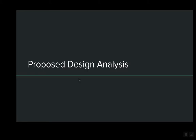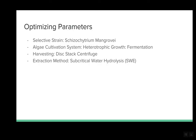Optimizing these parameters, we have created a proposed design. We chose the Schizochytrium mangrovei strain because it is heterotrophic and has the highest lipid content. Fermentation and heterotrophic growth were chosen because we can work around the high capital investment associated with photobioreactors while maximizing cell and lipid growth, as the process is independent of light and carbon dioxide availability. We chose disc centrifugation as an effective harvesting method, and subcritical water extraction because it has a high extraction percentage and can best utilize leftover water from fermentation.